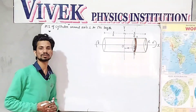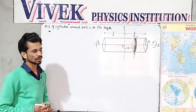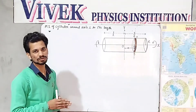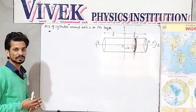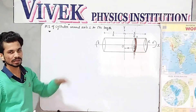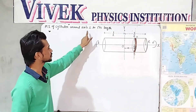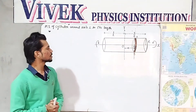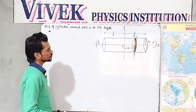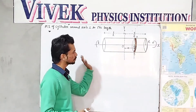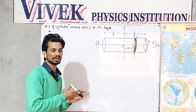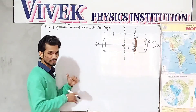In the previous video we looked at the MI of a solid sphere. Now let's talk about the moment of inertia of a cylinder in different conditions. In this video I am covering the MI of a cylinder around an axis which is perpendicular to its length. To find the MI of the cylinder we can assume that the complete cylinder is made up of a number of disks, as we assumed in the case of the solid sphere.